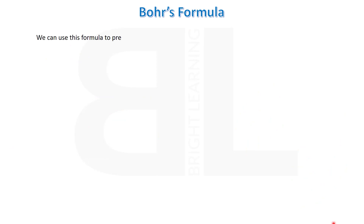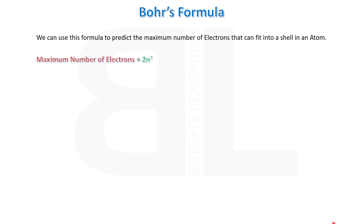We can use Bohr's formula to predict the maximum number of electrons that can fit into a shell in an atom. Bohr's formula is 2n², where n is the number of the energy level. This formula can be applied to find the number of electrons that any shell can hold.